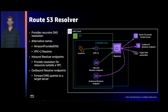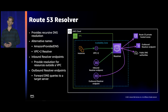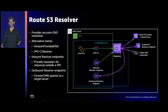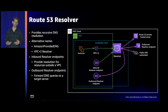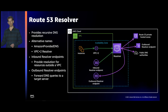Within your VPC, Route 53 Resolver handles recursive DNS queries for all of your resources — instances, Lambdas, etc. — recursing out to public authoritative name servers, private hosted zones, or to outbound endpoints as discussed.